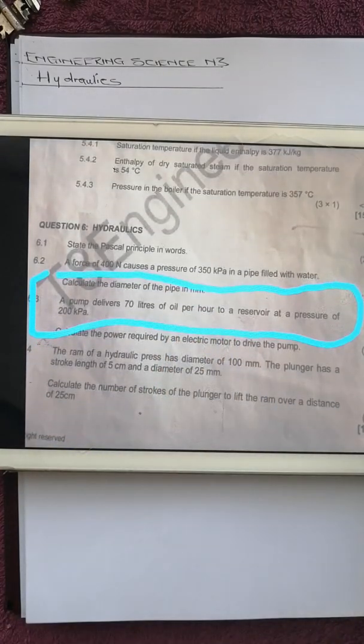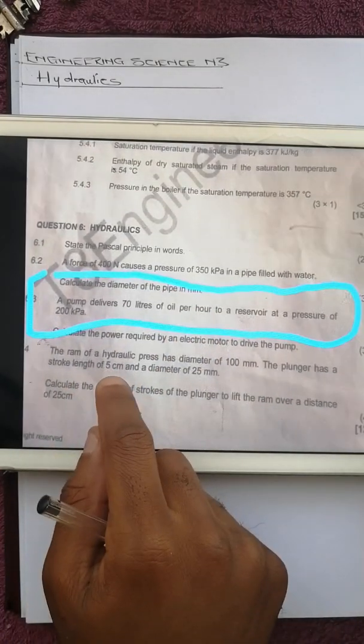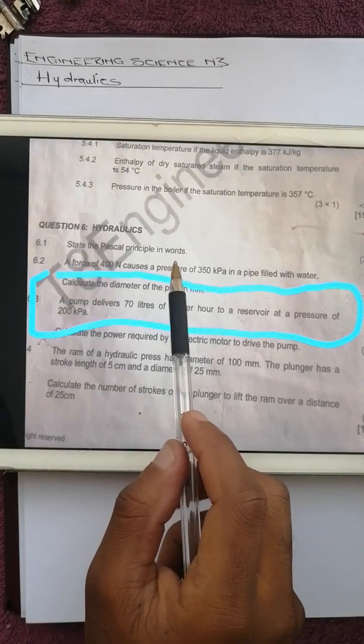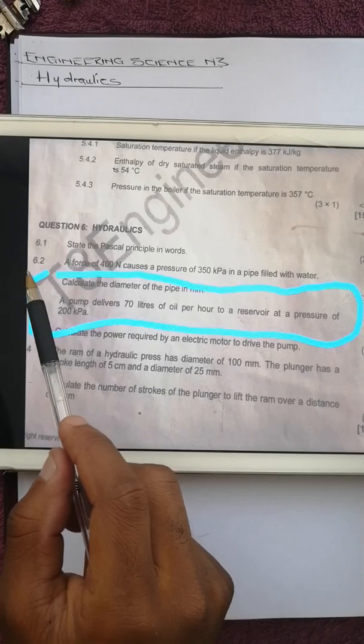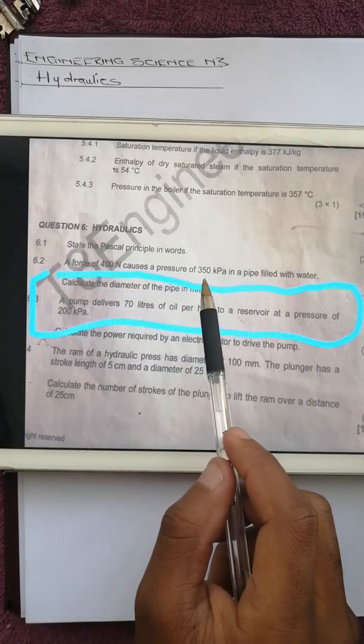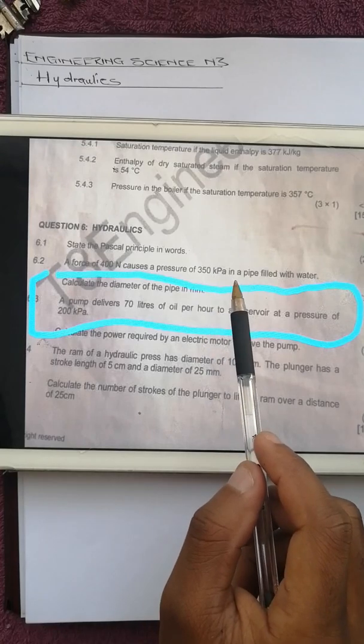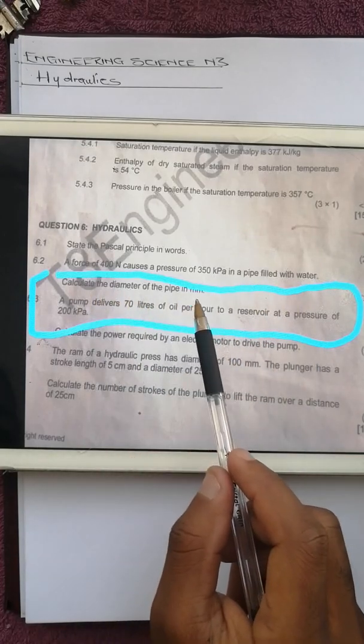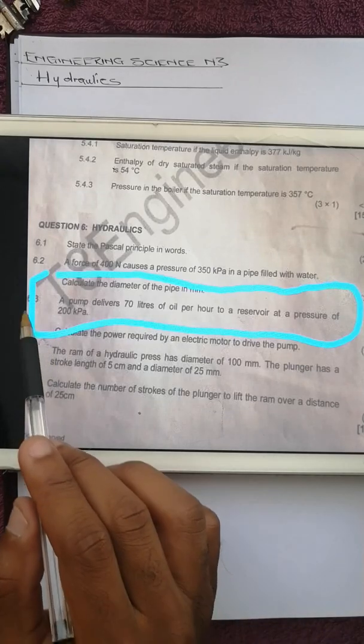whereby we will be treating four questions. The first question is Pascal's principle and weights. Question 6.2: a force of 100 Newton causes a pressure of 350 kilopascals in a pipe filled with water. Calculate the diameter of the pipe in millimeters.